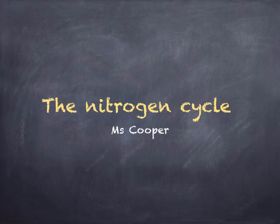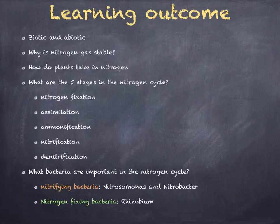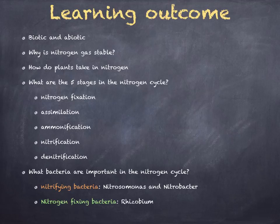In this topic, we're going to discuss the nitrogen cycle. We're going to look at biotic and abiotic, why nitrogen gas is stable, how plants take in nitrogen in the form of nitrates, and the five stages in the nitrogen cycle: nitrogen fixation, assimilation, ammonification, nitrification, and denitrification. And the bacteria that are important in the nitrogen cycle.